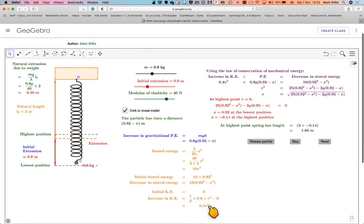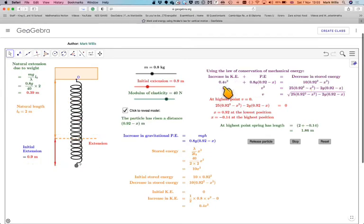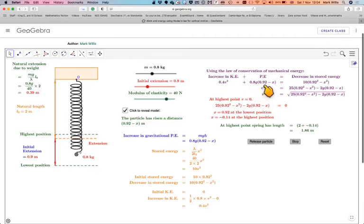So, under the conservation of mechanical energy, the increase in KE plus the PE will be equal to the decrease of the stored energy. Therefore, 0.4 V squared plus 0.8 G times 0.92 minus x will be equal to 10 times 0.92 squared minus x squared. If we rearrange that, we get that V squared is that and V will be equal to that.